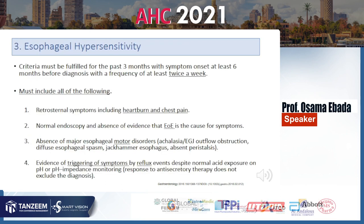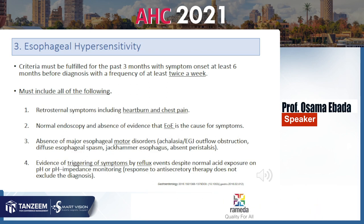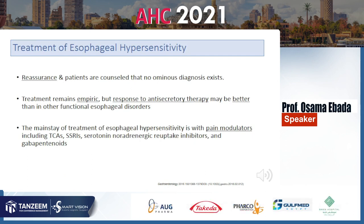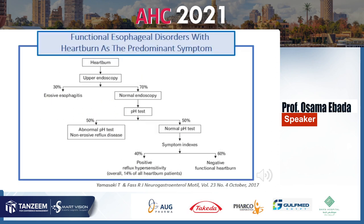Esophageal reflux hypersensitivity occurs at least twice a week with heartburn or chest pain, but no esophagitis on endoscopy or biopsy, negative motility, and symptoms associated with reflux episodes. Reassurance is key, and there is some response to anti-secretory therapy — better than other functional esophageal disorders — but the mainstay treatment is pain modulators.